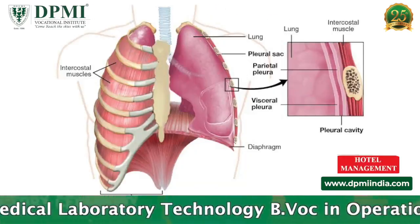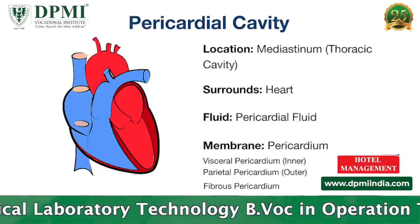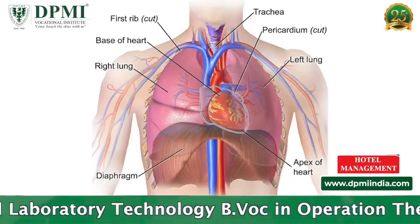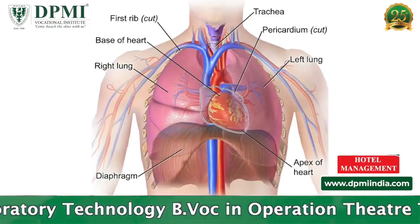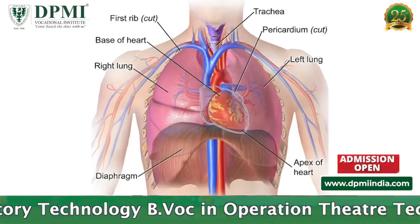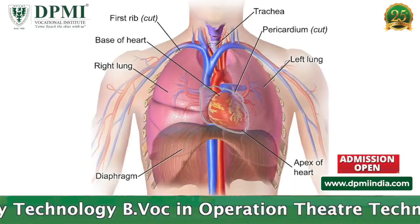The thoracic cavity fills the chest and is subdivided into two pleural cavities and the pericardial cavity. The pleural cavities hold the lungs, and the pericardial cavity holds the heart.